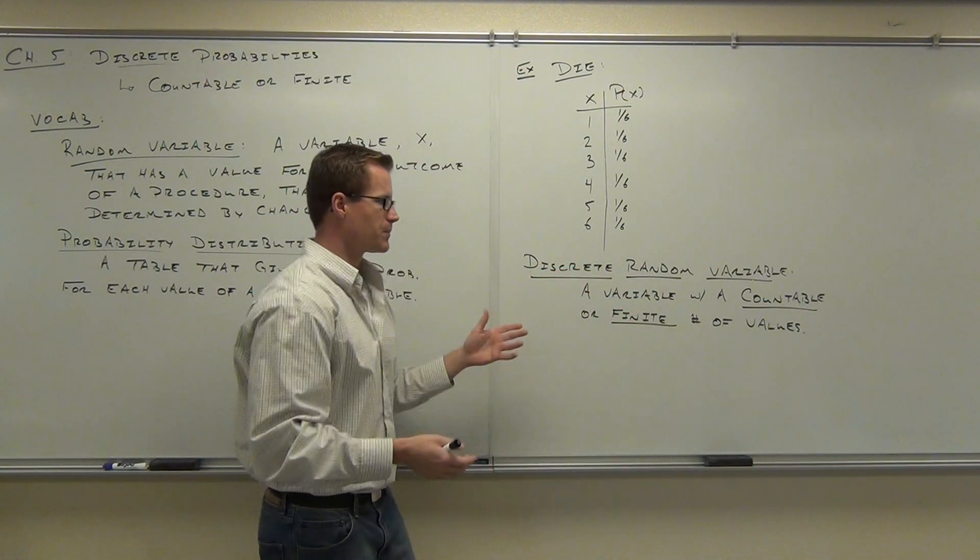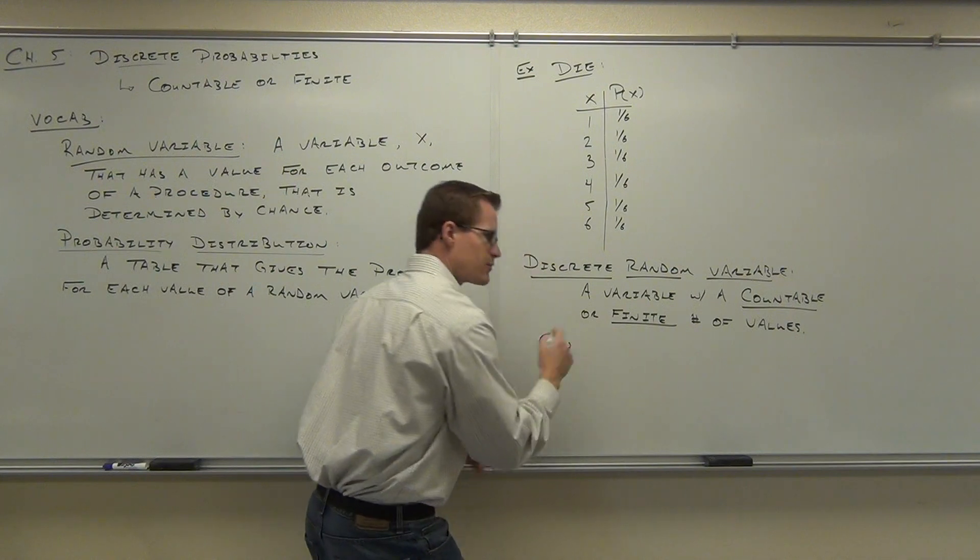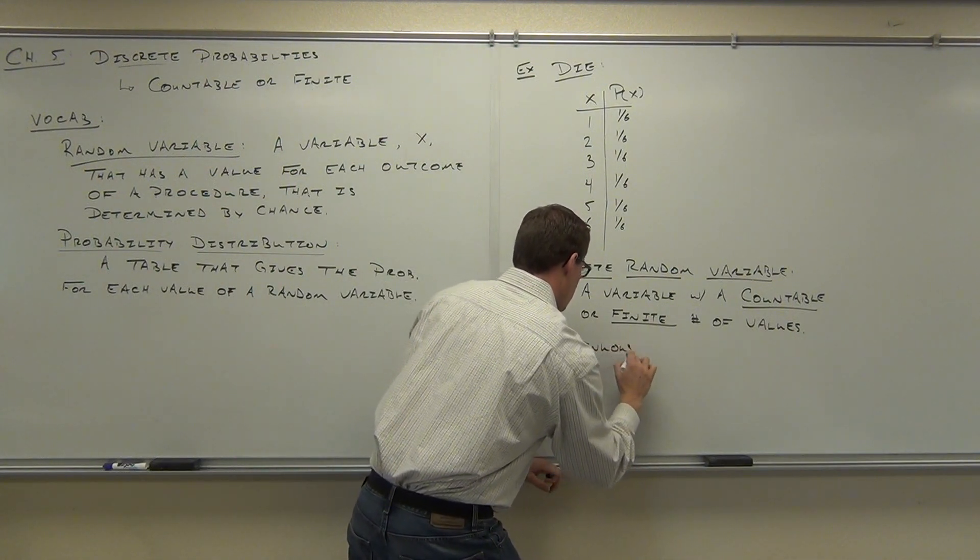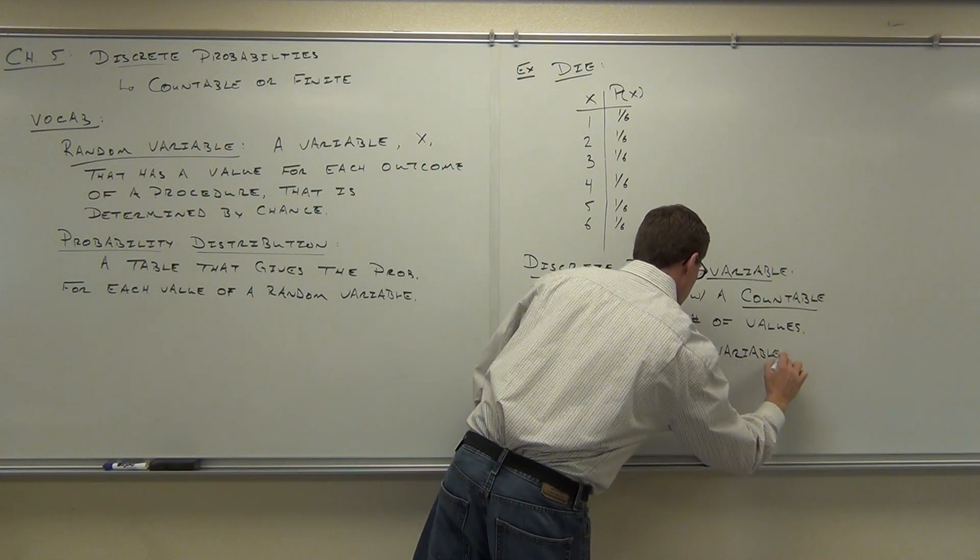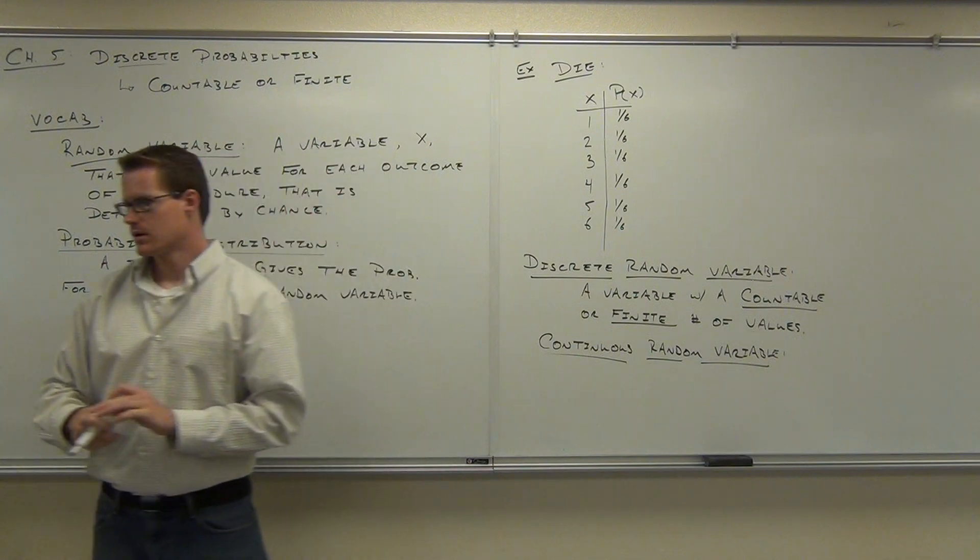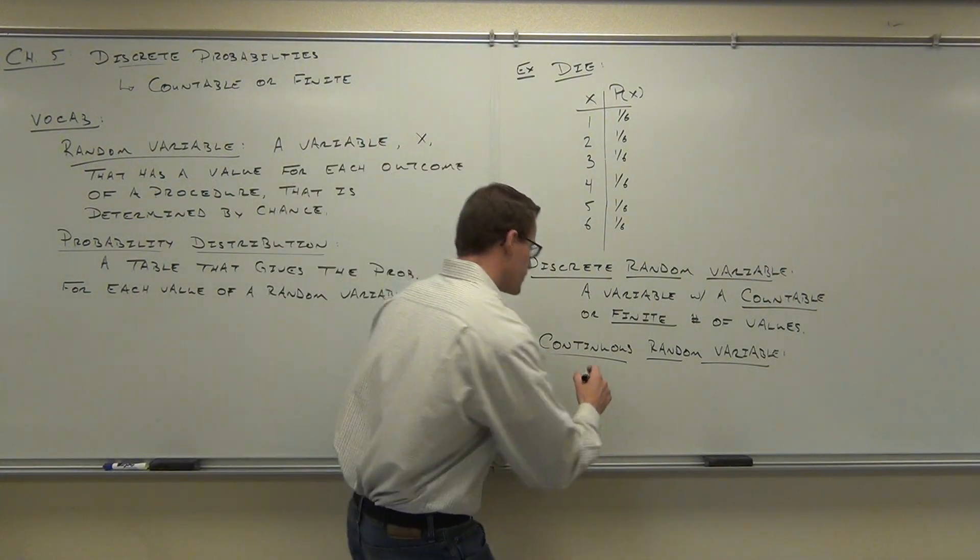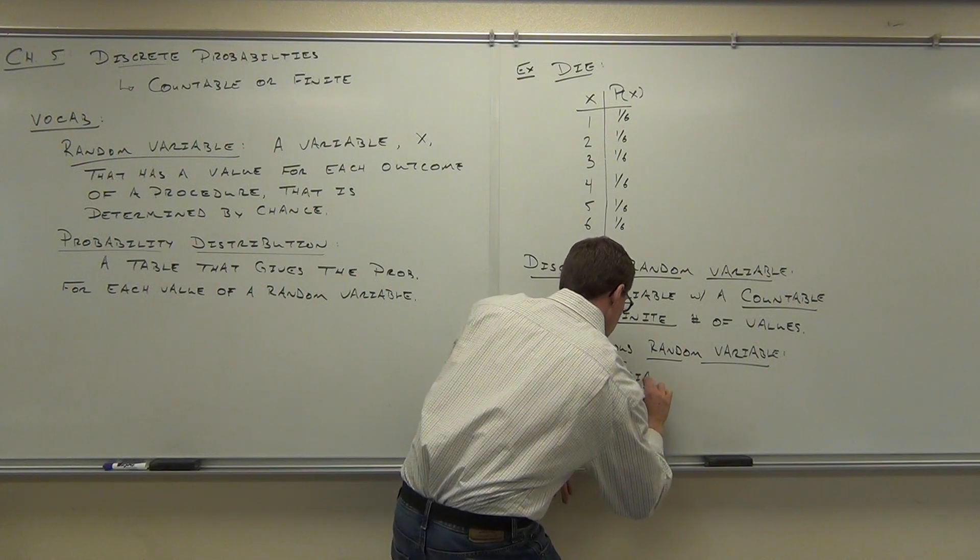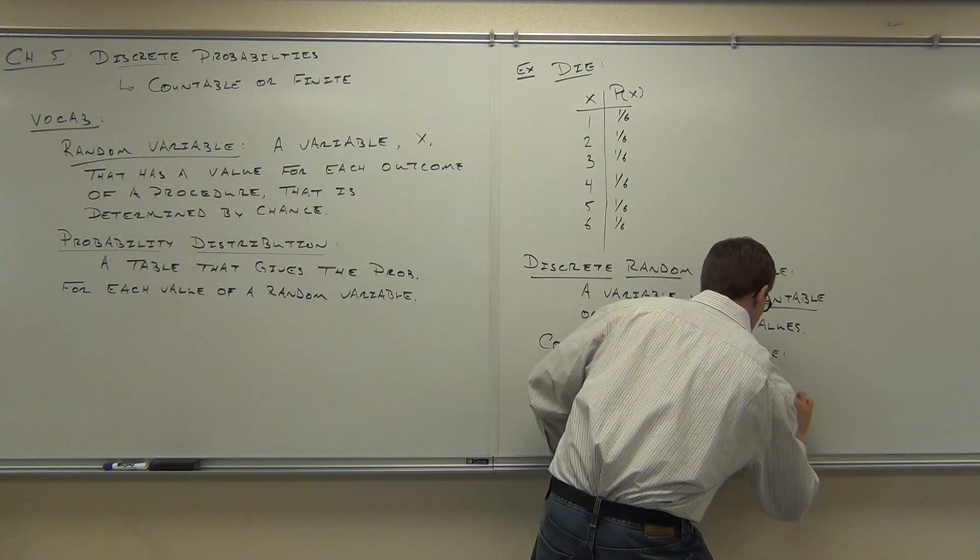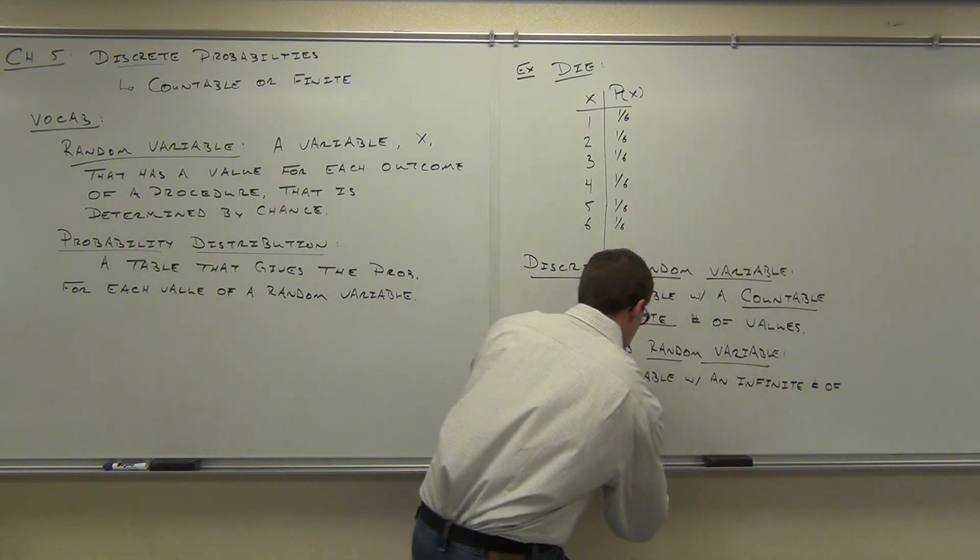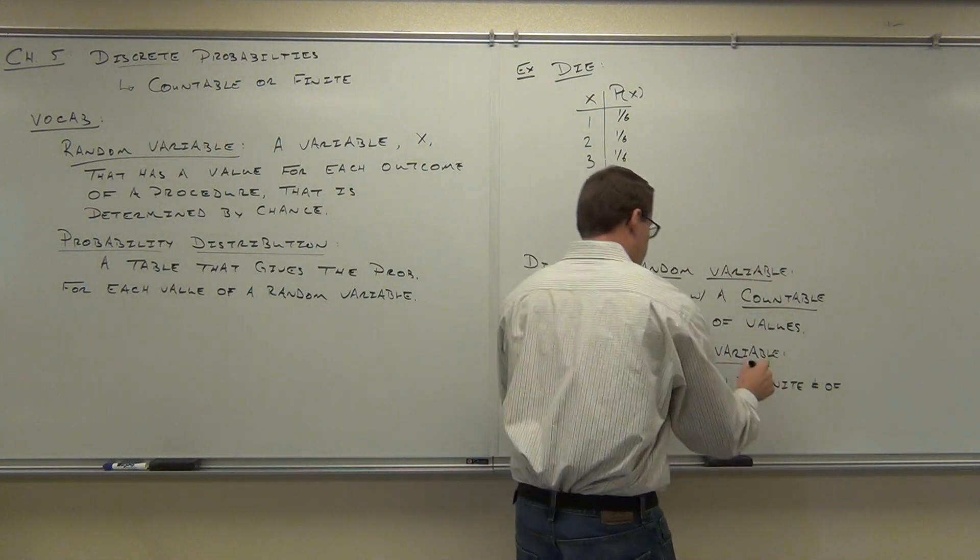I'm not sure if you're with me on that. Okay. That's discrete. Countable, finite. A continuous random variable would be everything else. Uncountable or infinite. We'll just say infinite. A variable with an infinite number of values. We'll just say infinite. A variable with an infinite number of values.